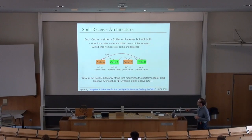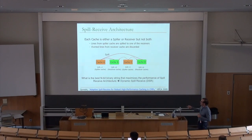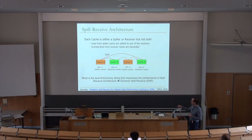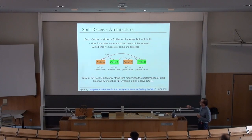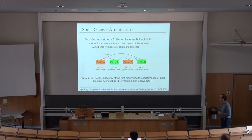A spiller can spill to different receiver caches. The key question is: how do you decide which cache is a spiller and which is a receiver? This is posed as finding the best m-bit binary string — essentially a bit vector — that maximizes the performance of the spill-receiver architecture.